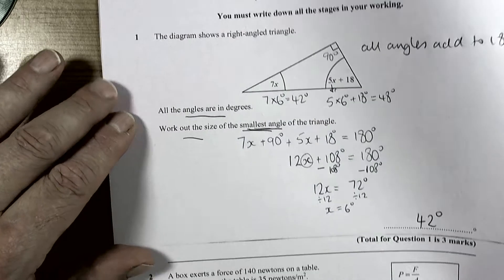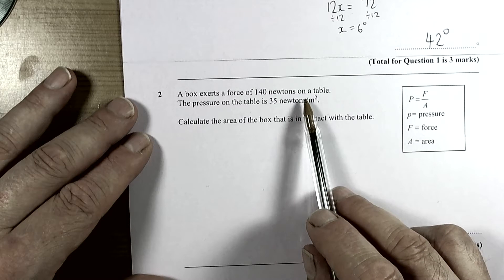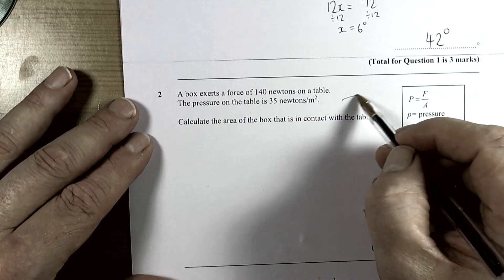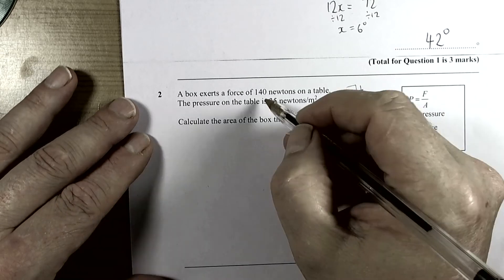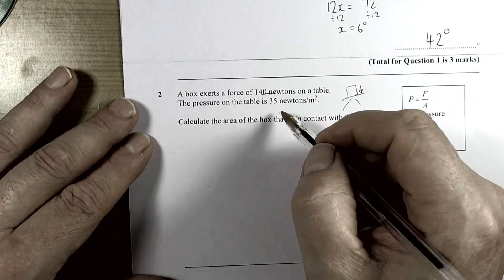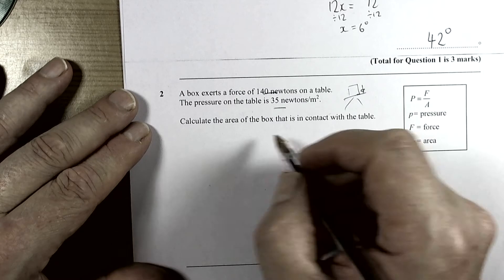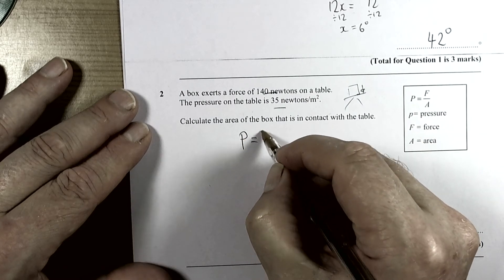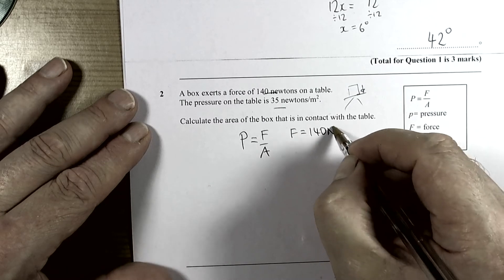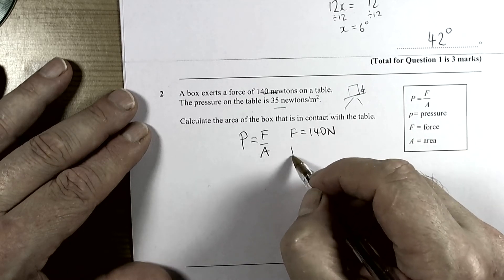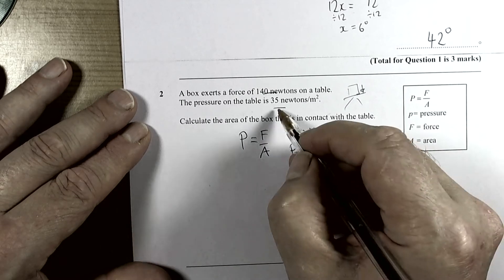Question 2 tells us about a box exerting a force on a table. We've got a table with a box on it, exerting a force of 140 newtons, and the pressure on the table is 35 newtons per square meter. They've given us the formula pressure equals force over area. With any formula we should write it down and decide what values we know. We know the force is 140 newtons, the pressure is 35 newtons per square meter, and the question says calculate the area, so the area is the unknown.